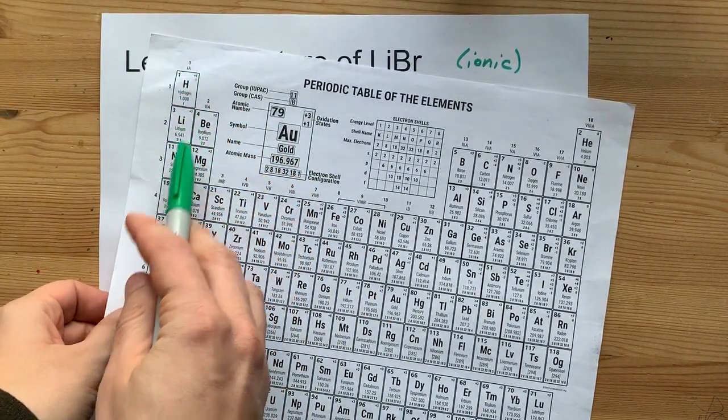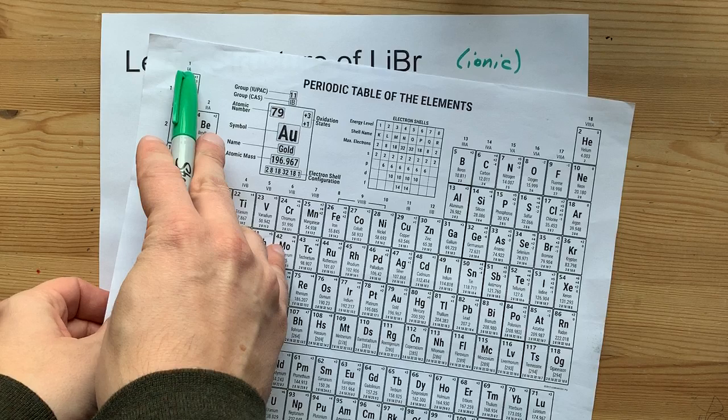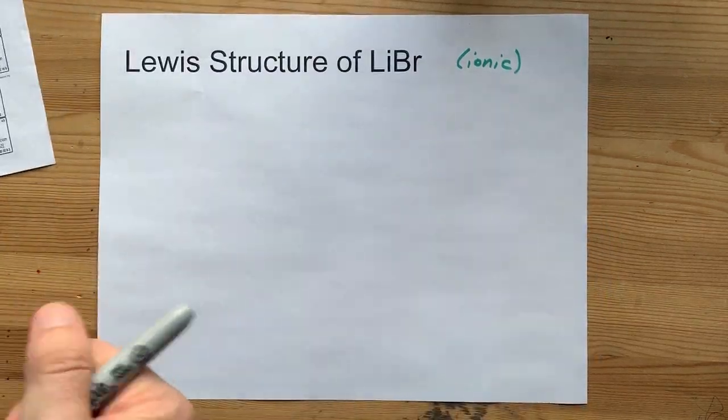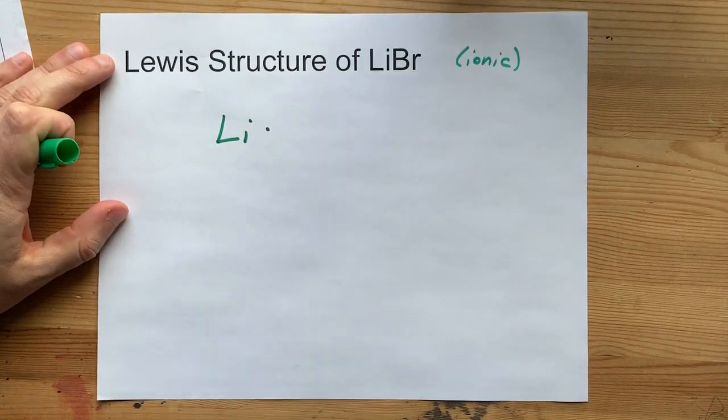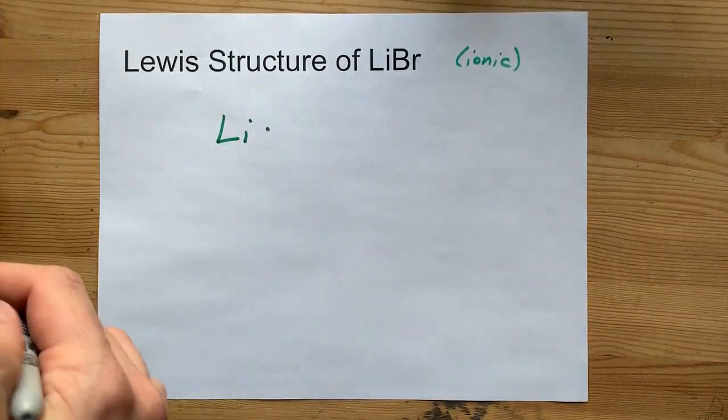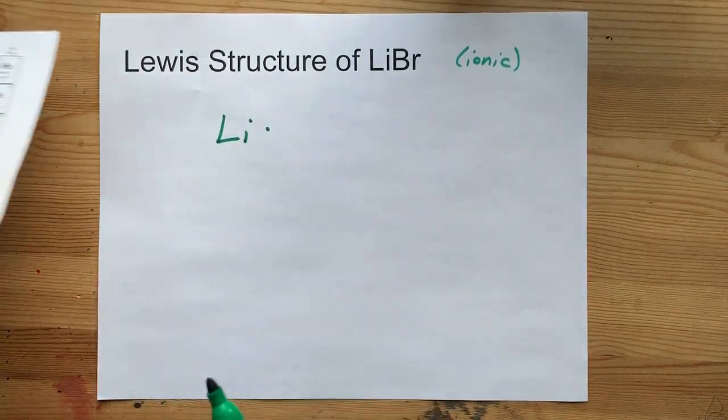Lithium is in the first column, alkali metals, group one, and brings one valence electron with it. Get it? Column one, one valence electron. There it is with its one electron, that's the Lewis structure for atomic lithium.